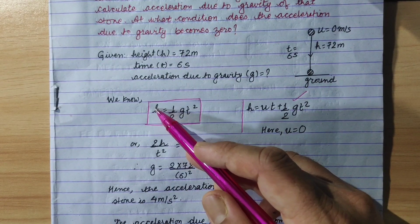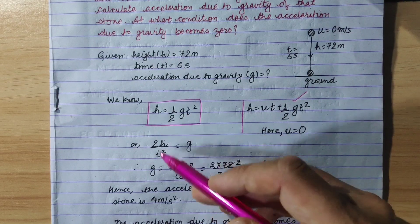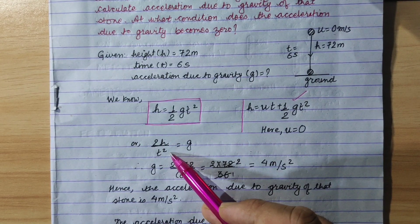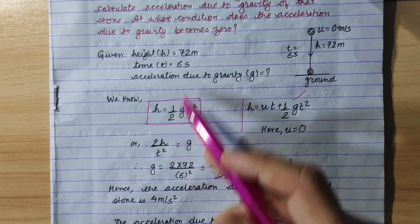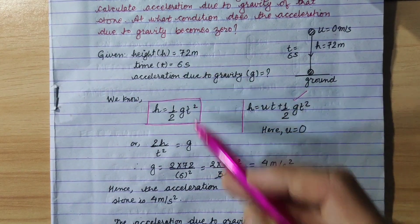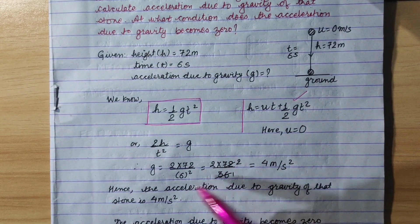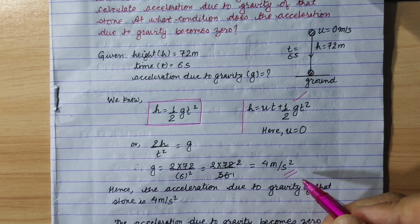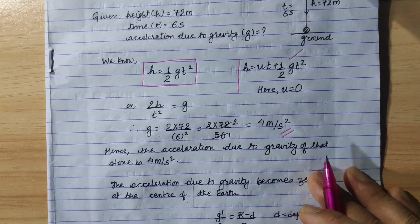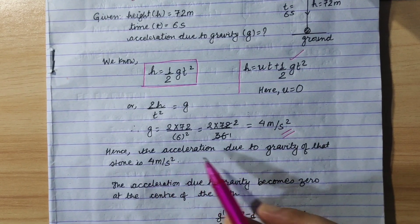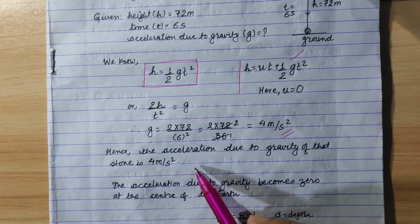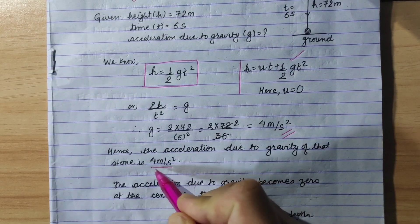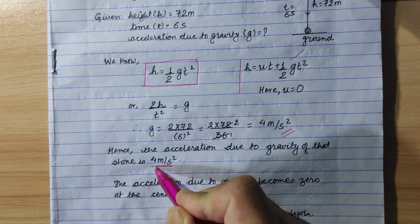Now, the height of that stone will be 7 m. So the value of that stone — using g — 27 m². Multiplying by g, 27 m² times 6.